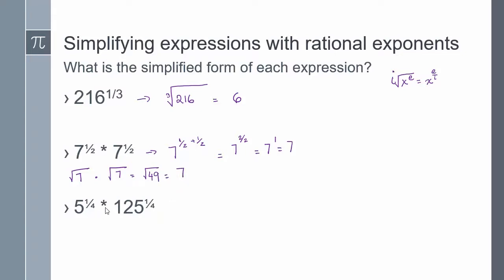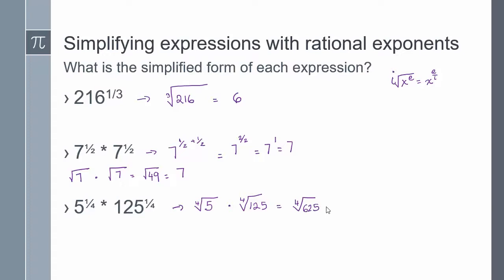For 5 to the power of 1 fourth times 125 to the power of 1 fourth, the bases are not the same, so I can't just add the exponents. But I can rewrite this as a radical and simplify. I have the fourth root of 5 and the fourth root of 125. Since the indexes are the same, I can multiply 5 times 125 to get the fourth root of 625, which is 5.